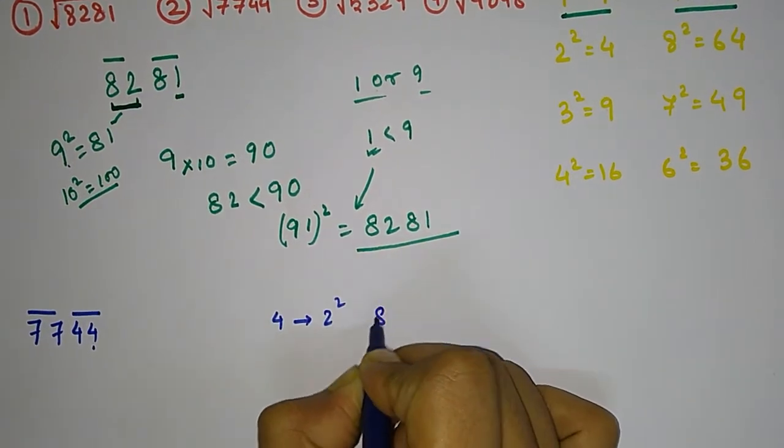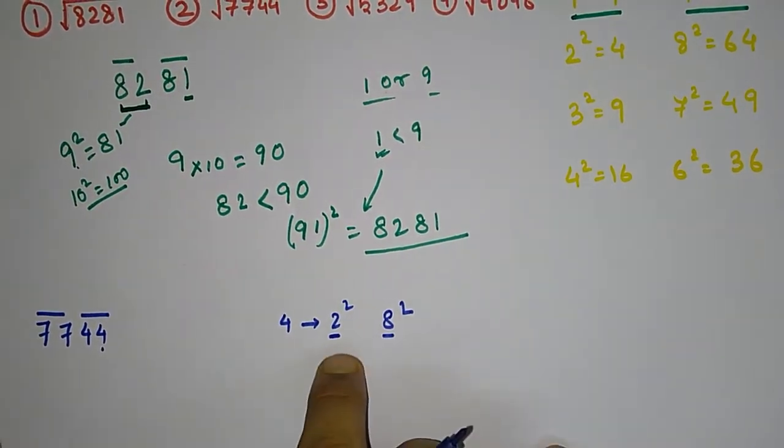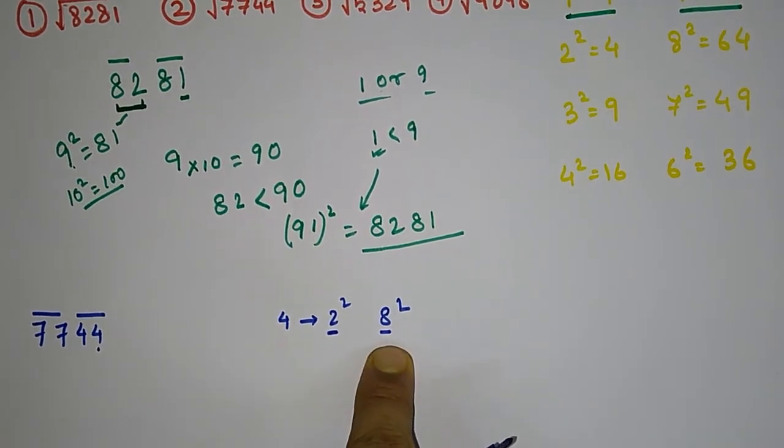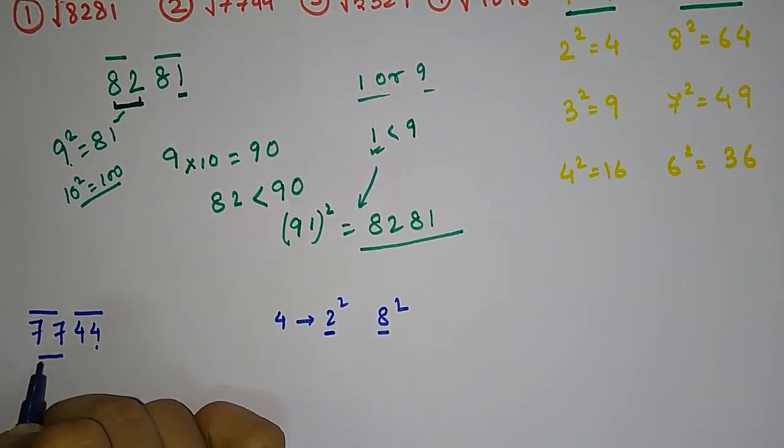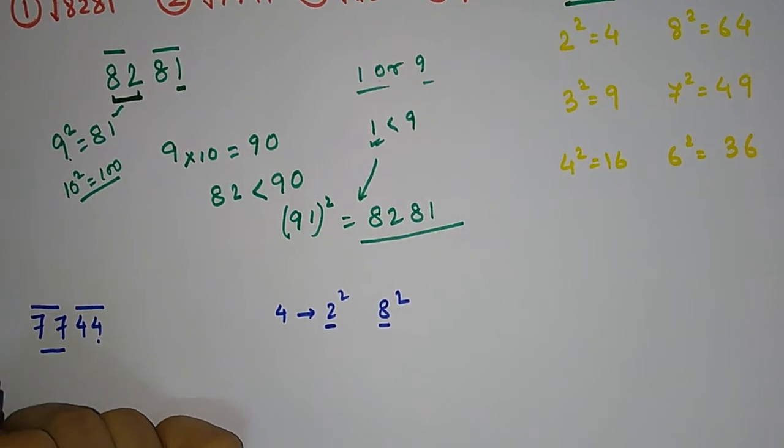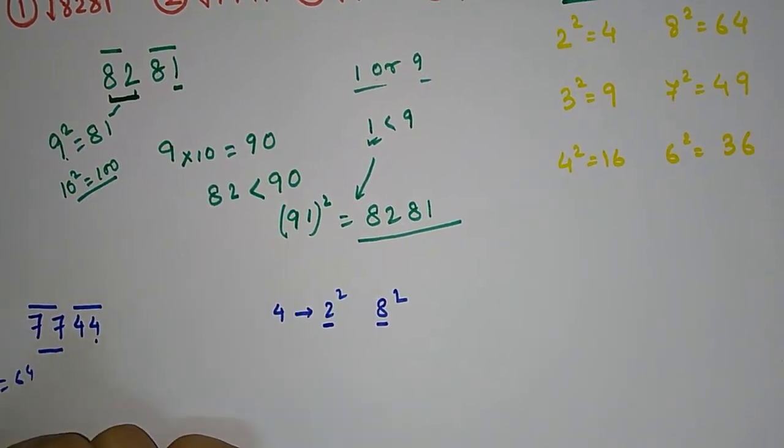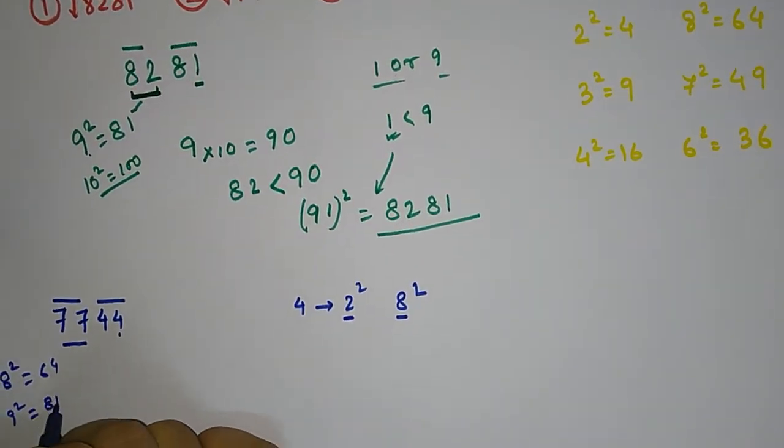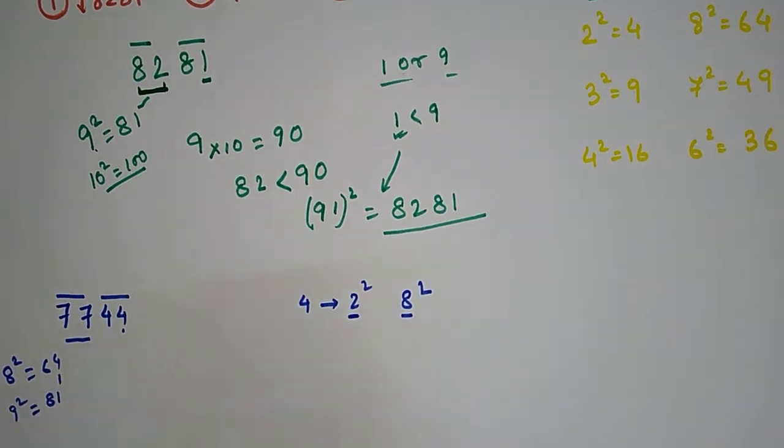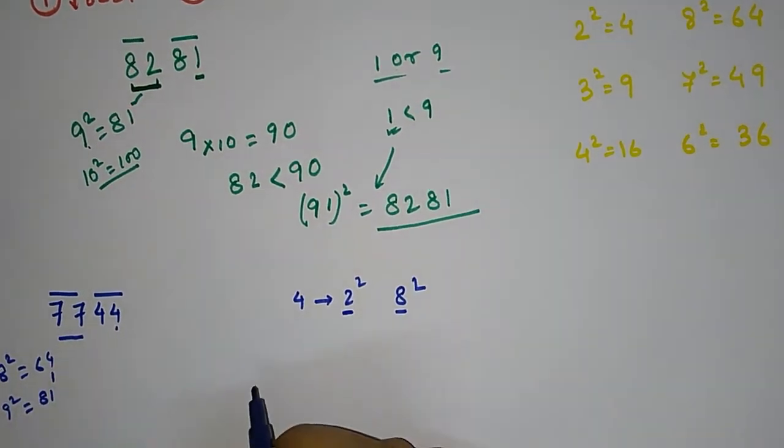is 64 and 9 squared is 81, so 77 lies in between 8 and 9. We are going to take the smaller one, that is 8, multiplied by the next number, that is 9, which gives us 72.